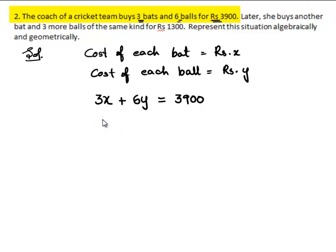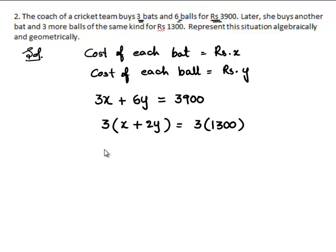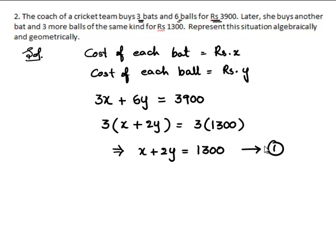We can take 3 as a common, so 3 times (X + 2Y) is equal to 3 times 1300. The 3 gets cancelled on both sides, and we get X + 2Y = 1300. We name this as equation number 1.